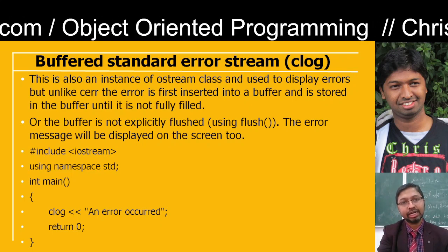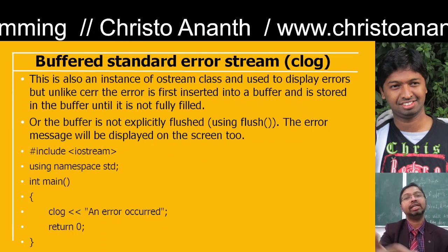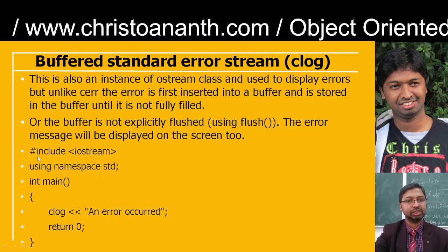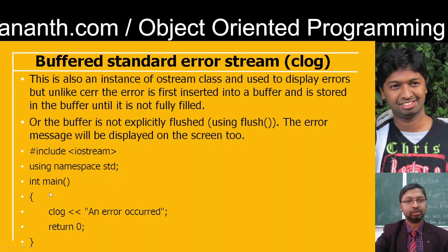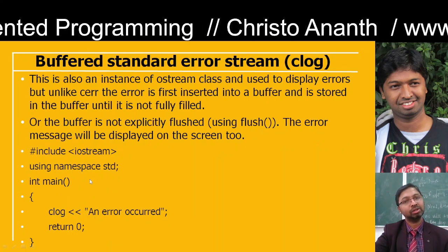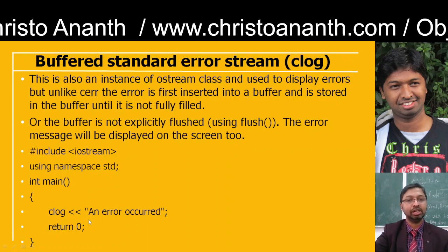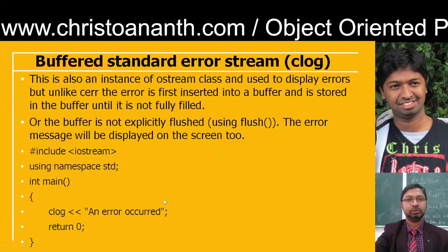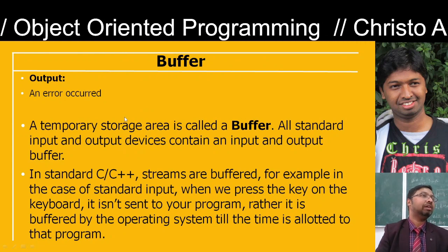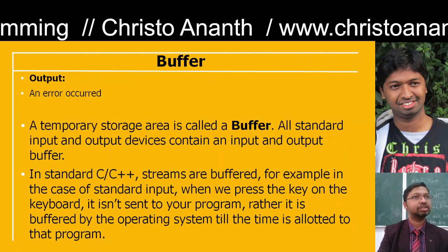Unlike cerr, with clog the error is first inserted into the buffer and stored there until the buffer is fully filled. That is the reason you will have: #include iostream, using namespace std, in main function, clog. It is a buffered standard error stream. clog 'an error occurred', return 0 — the output you will see is 'an error occurred'. You have temporary storage — what you call a buffer. The input and output devices contain input buffer as well as output buffer.